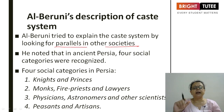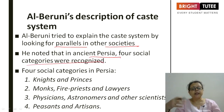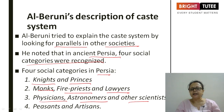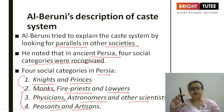He noted that in ancient Persia, four social categories were recognized: knights and princes; monks, fire priests and lawyers; physicians, astronomers and other scientists; and peasants and artisans. Being well versed with this structure of society, he started correlating and comparing Indian social structure with foreign countries.